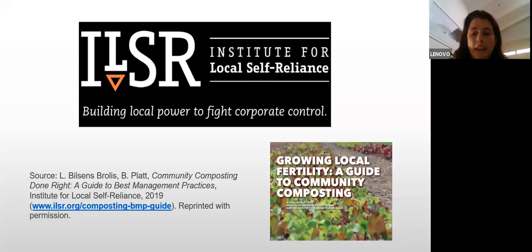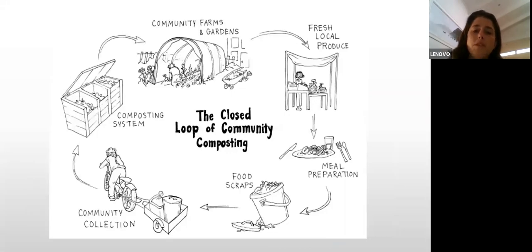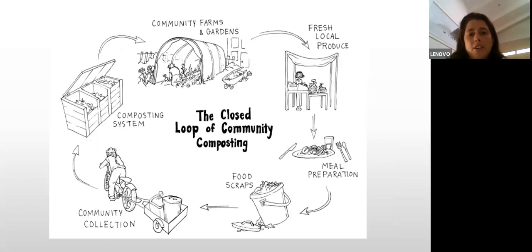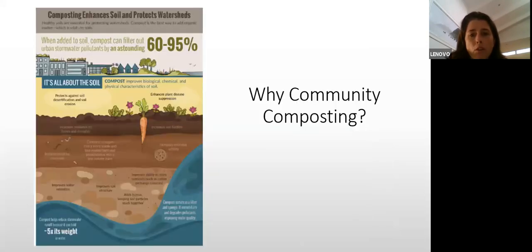This is basically what we're trying to achieve with community composting — we are closing the loop. Waste food and garden waste is taken and composted right in the community where it's created, and it goes back into the soil to grow wonderful fruit and vegetables for us to eat and keep us healthy.